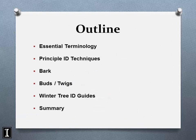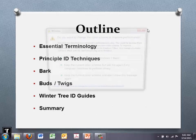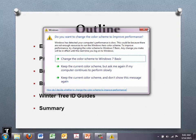Today we're going to cover some essential terminology — basic terms you need to understand, because without them, learning to identify trees and using tree ID books becomes a fool's errand. We're going to focus on terminology related to bark and buds, and twigs as well, since that's where buds are located. We'll go through principal ID techniques with a focus on bark and buds, and I'll recommend some outstanding and very affordable winter tree guides.